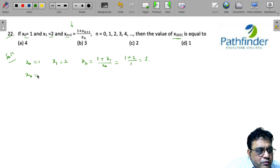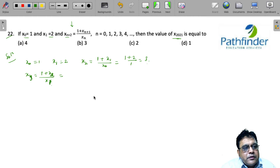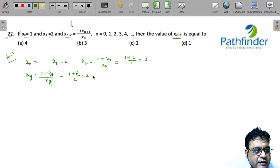What about x₃? x₃ is 1 plus x₂ by x₁. So what do you have? 1 plus x₂ is 1 plus 3 by 2, that gives you 2.